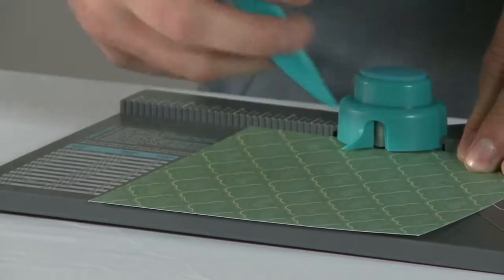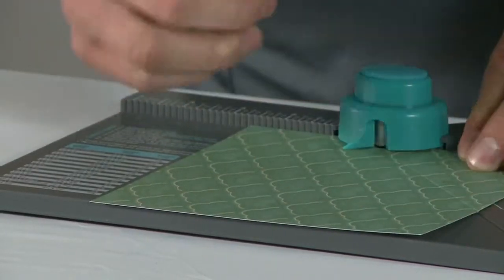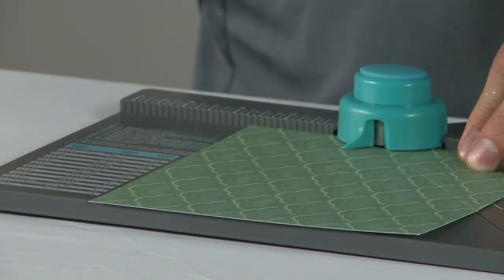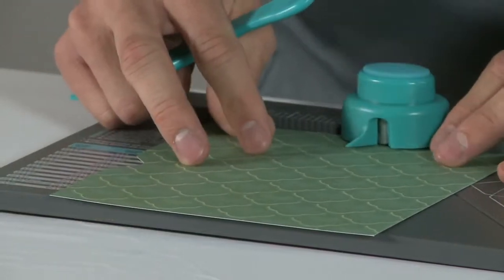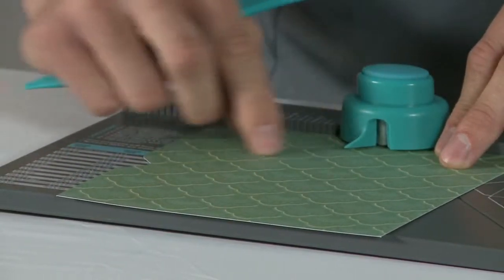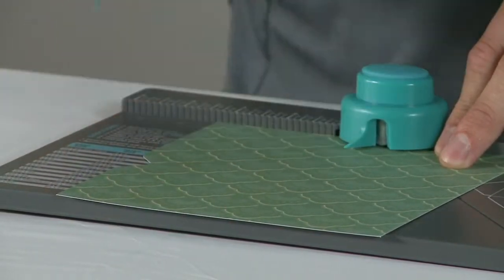Then we're simply going to punch and score and from here on out we don't have to measure. We don't have to do anything besides rotate it around, line up our score mark that we just made with this little notch and repeat.